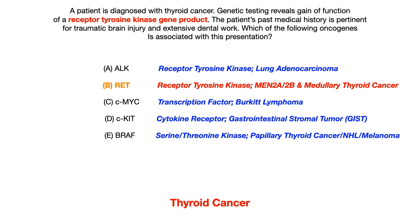Lastly, choice E, BRAF, is a serine threonine kinase. While it is associated with a type of thyroid cancer — in this case papillary — and also with non-Hodgkin's lymphoma and melanoma, you need to know that BRAF is a serine threonine kinase and not a receptor tyrosine kinase, and on that basis you would eliminate that answer choice.